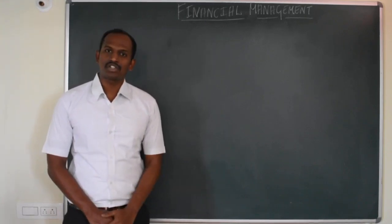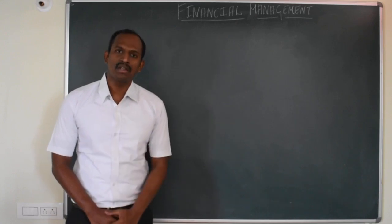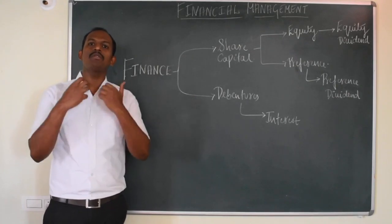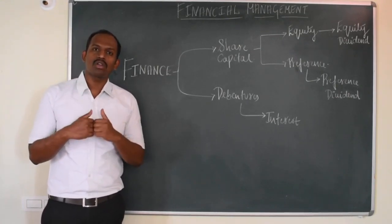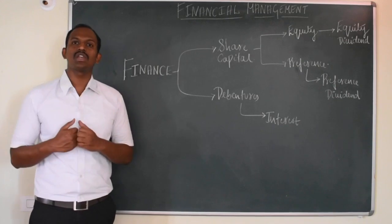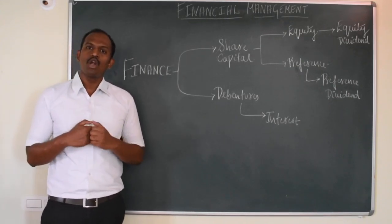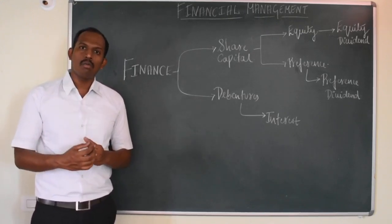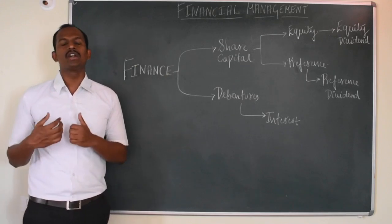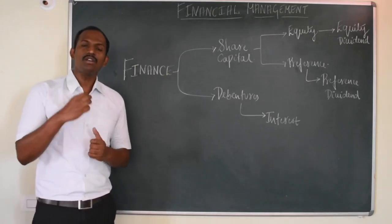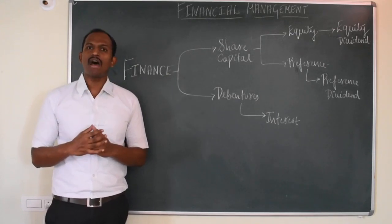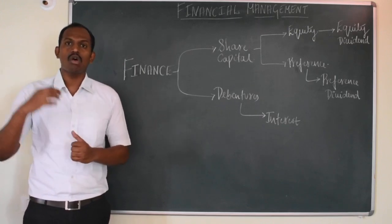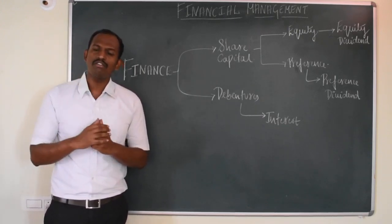We will also cover the assumptions of capital structure and what is optimum capital structure. First, let's understand what we mean by finance. Finance is all about the sources of funds towards a business organization. We have two major sources of funds: long-term sources and short-term sources. In terms of long-term sources, we have share capital as well as debentures or debt capital.